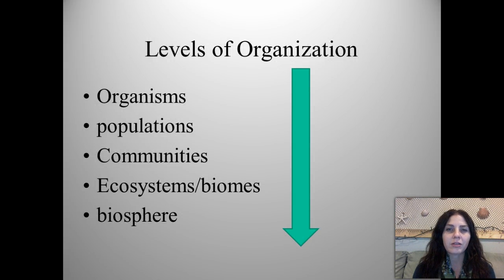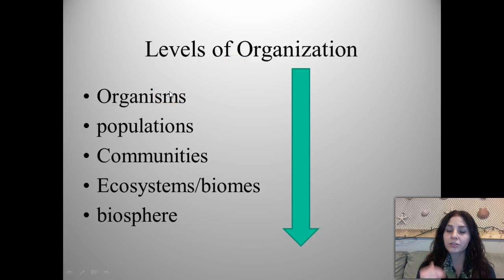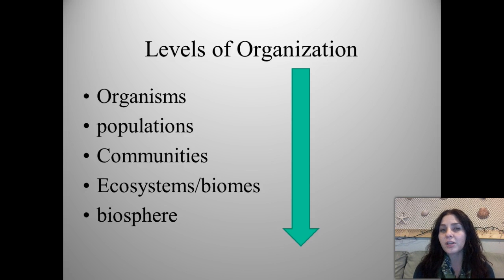Earlier on in the year we talked about levels of organization, starting with biomolecules. Now we're going to talk about levels of organization starting with the organism and ending with the biosphere. In increasing order — getting larger and larger — we go from organisms, to populations, to communities, to ecosystems or biomes. And all of the ecosystems and biomes on Earth are called the biosphere.